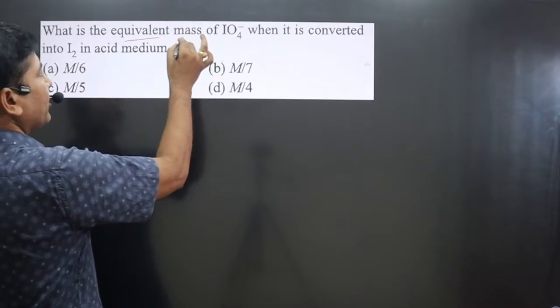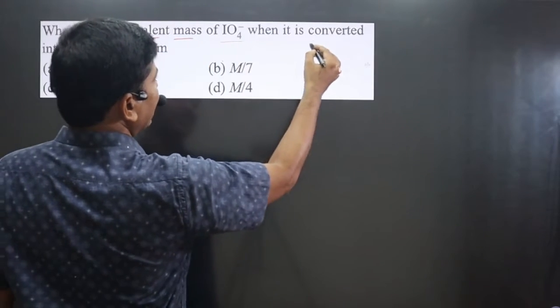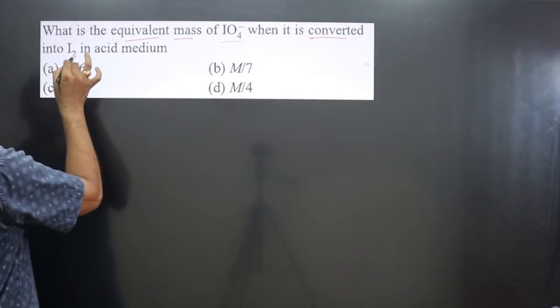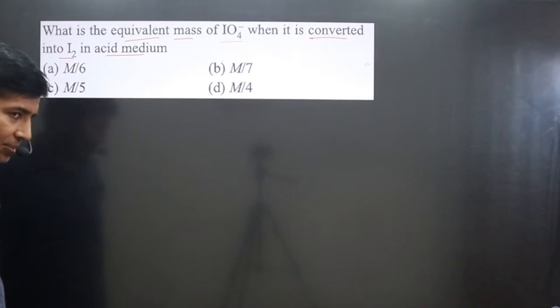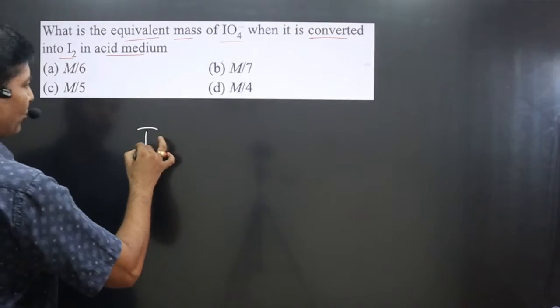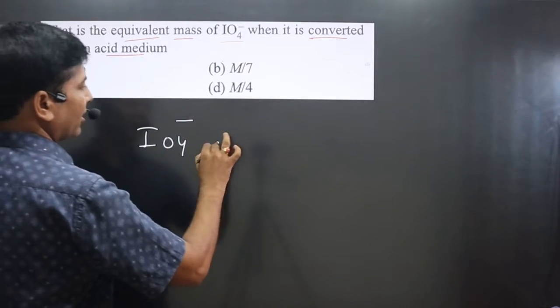The question asks: What is the equivalent mass of IO₄⁻ when it is converted into I₂ in acid medium? First, we write down the conversion reaction: IO₄⁻ is being converted